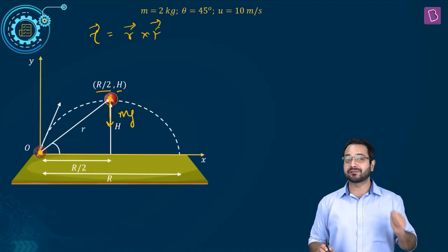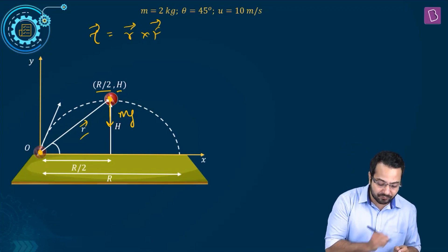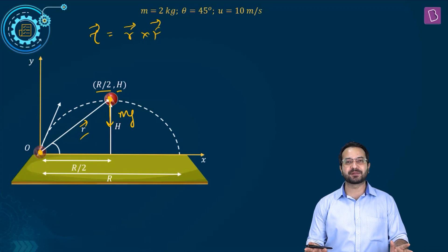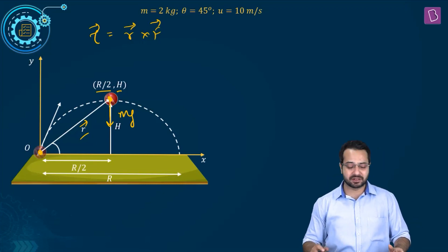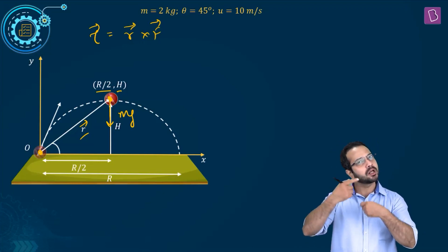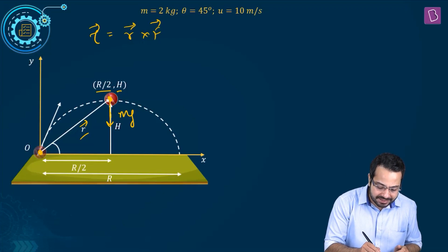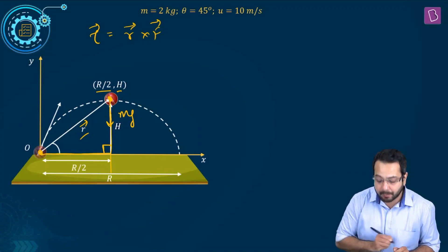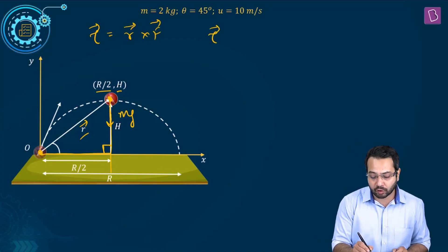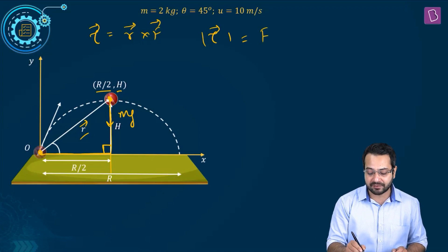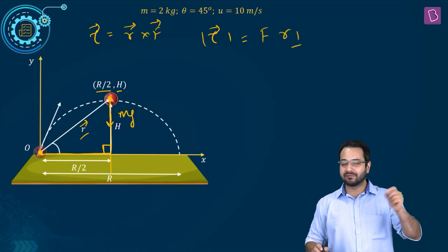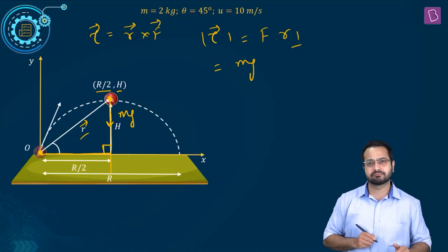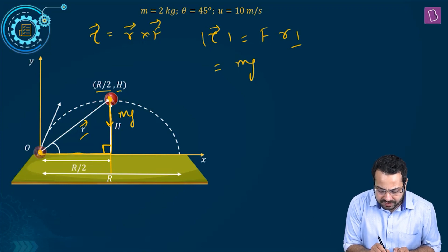We can find R/2 and H and express the R vector, then take R cross F — but there is a much simpler method. Extend the line of action of the force and drop a perpendicular from the point about which the torque is calculated. The magnitude of torque is simply F times R-perpendicular. R-perpendicular here is half the range. Range is u² sin2θ / g: substituting 10² × sin90° / 10 gives 10 meters. Half of that is 5 meters.